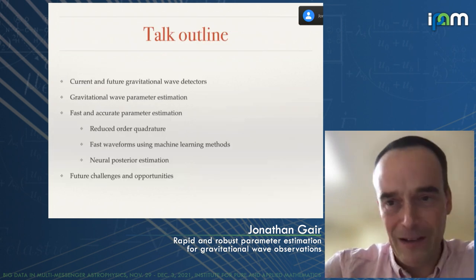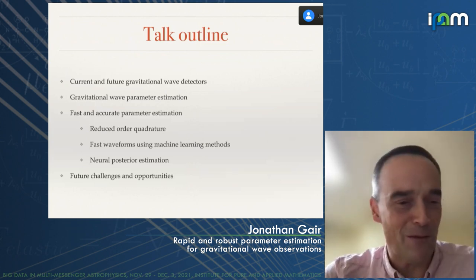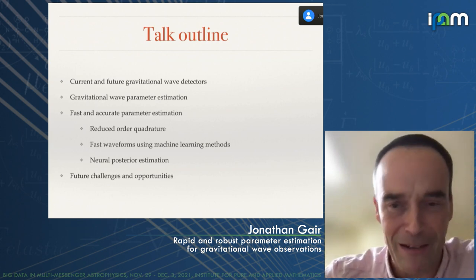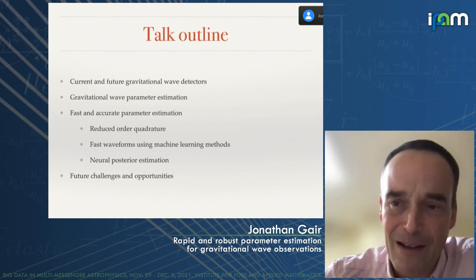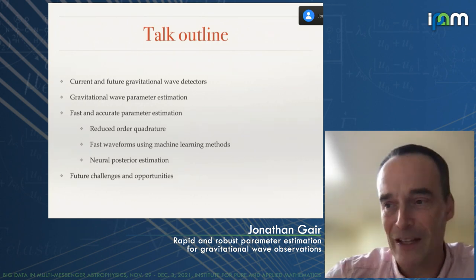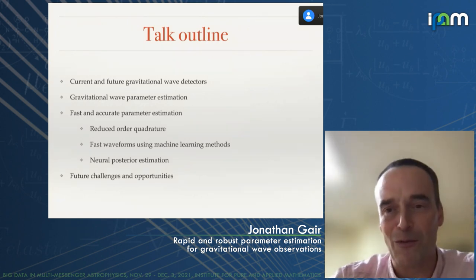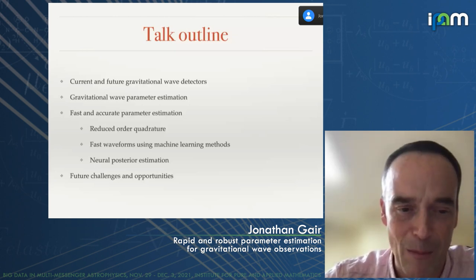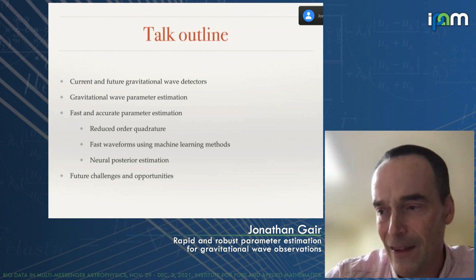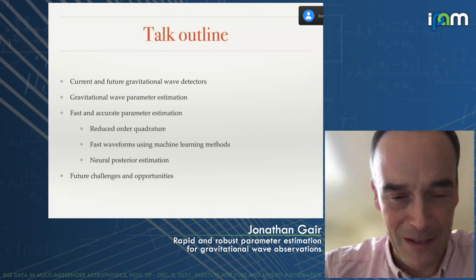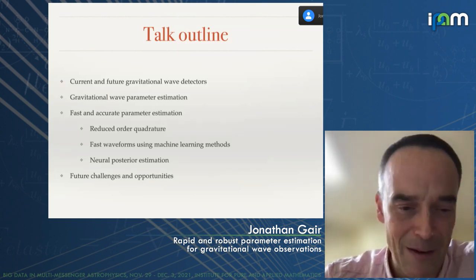The plan for my talk: I'll start with a brief overview of current and future gravitational wave detectors and describe the paradigm we use for gravitational wave parameter estimation. That should be familiar to most people in this room. Then I'll talk about fast and accurate parameter estimation methods. I'll briefly mention reduced order quadrature and the use of machine learning techniques to accelerate waveform model evaluation. I'll focus most of my time on the work we've been doing on neural posterior estimation, and then highlight some of the challenges we will face to extend these methods to future detectors.